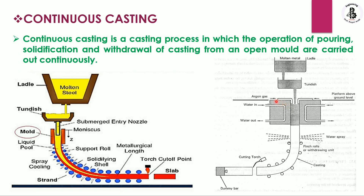Around this mold, argon gas is supplied, and there are facilities for water in and water out, which controls the temperature. Once the high-temperature molten metal enters the mold and passes through that region, it is cooled down. Water spray is also applied as an additional cooling feature.